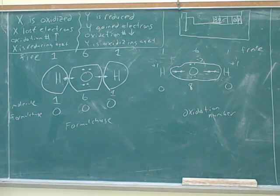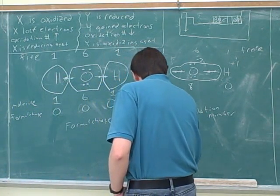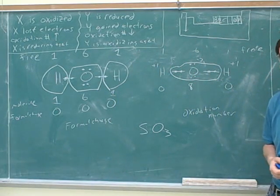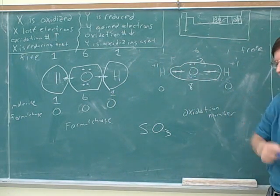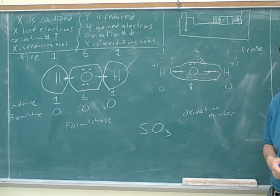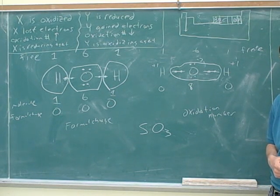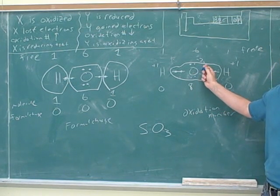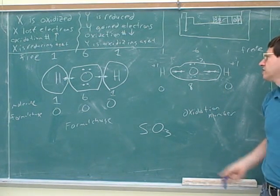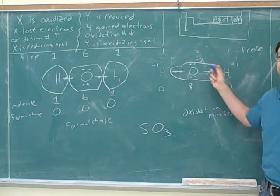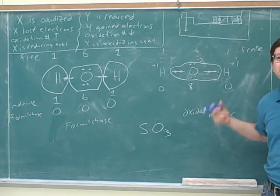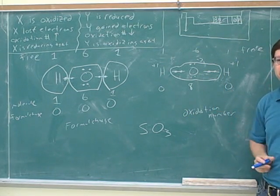Let's find the oxidation numbers for the elements in this compound. We could use the Lewis structure method, but I wanted to do that just once to give some intuition for oxidation number. Now let's go back to using the rules, because that's a lot faster for finding oxidation numbers.